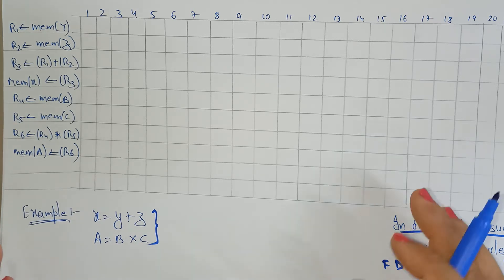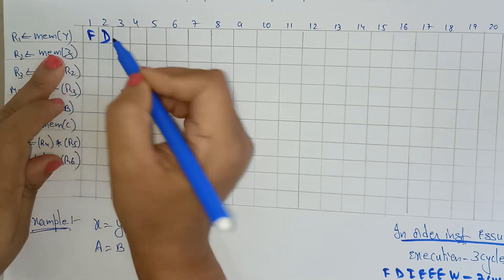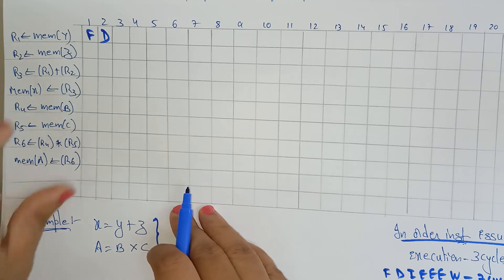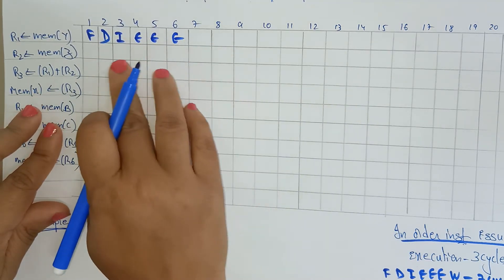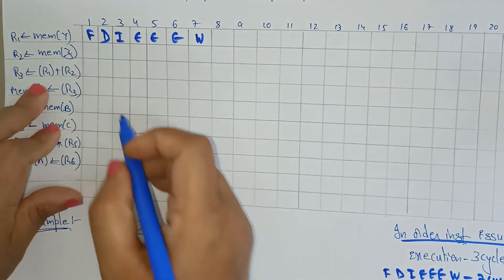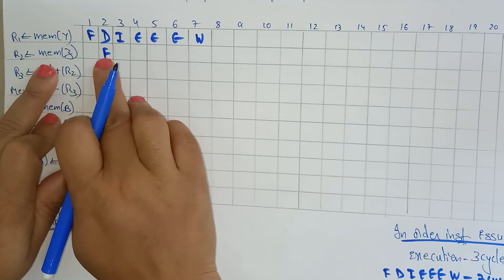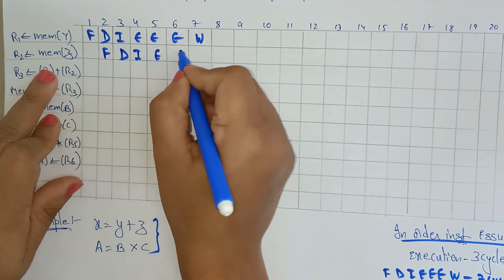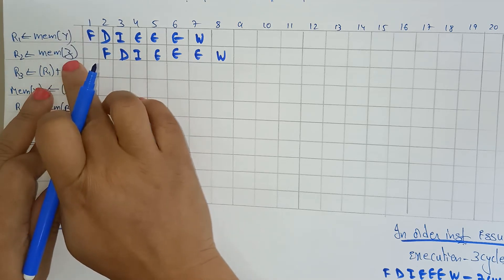Now let's see what happens in the pipeline. For the first instruction, we fetch the data, then decode — decoding means identifying that the process must take the address and move it to register r1. After that, issue (reserving resources), then execution takes three cycles, then write-back. For the second instruction, fetch starts at the end of the decoding cycle — so fetch, decode, execution, execution, execution, and then write-back. For the r3 instruction, r3 depends on r1 and r2, so both must complete before we start execution.